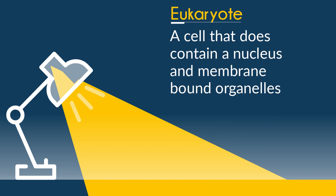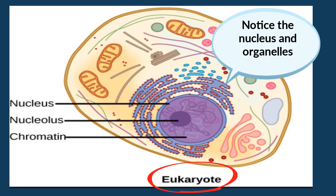Next, eukaryote. This is a cell that does contain a nucleus and membrane-bound organelles. You will see in this picture of a eukaryote cell that it does have a nucleus and organelles.